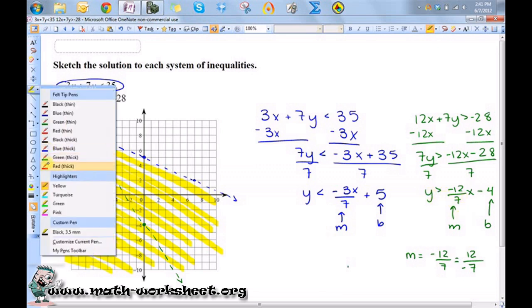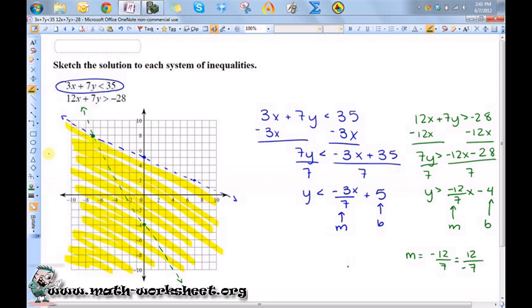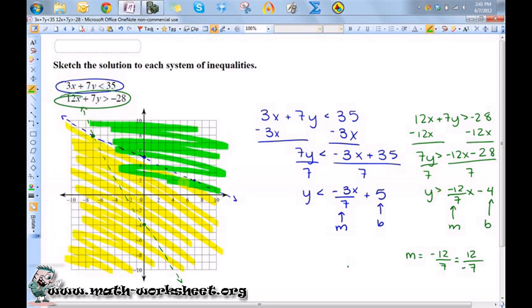And this one is saying all the y's that are greater than that. So this one is the one above the green. So the area where those two intersect is going to be the area that I need to shade in.